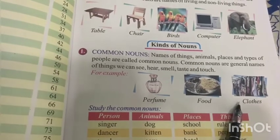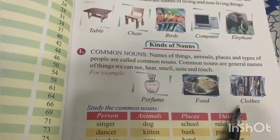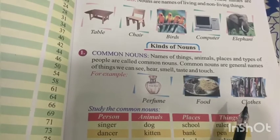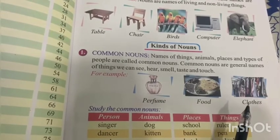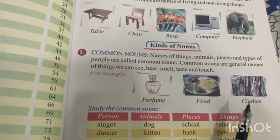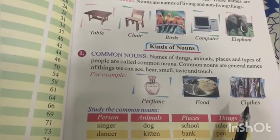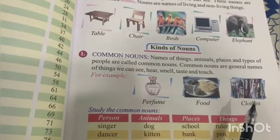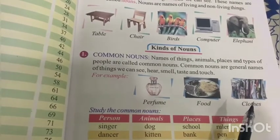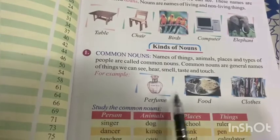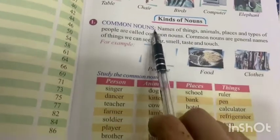Clothes — the clothes we wear also have a name. We call them clothes in English and kapdhe in Hindi. These are general names, so we call them common nouns. Now let's study more common nouns.